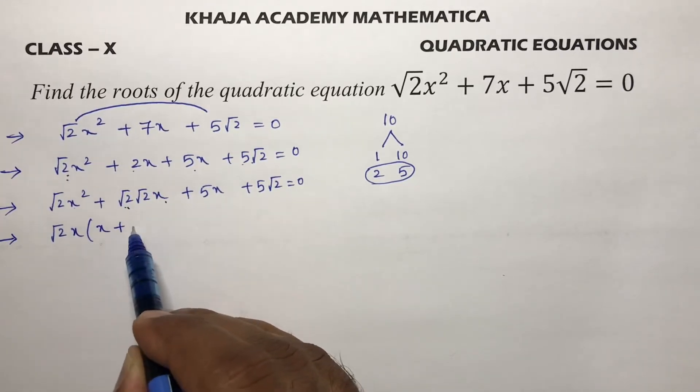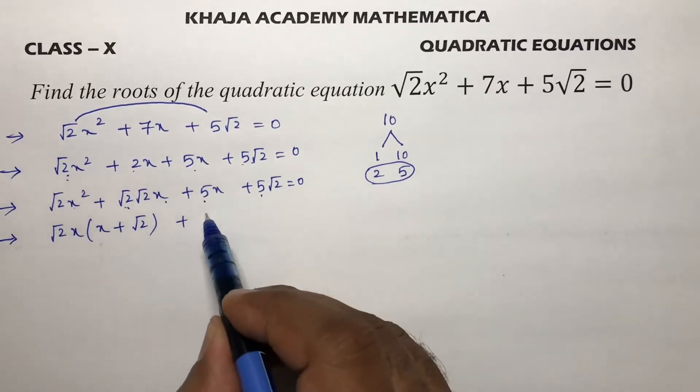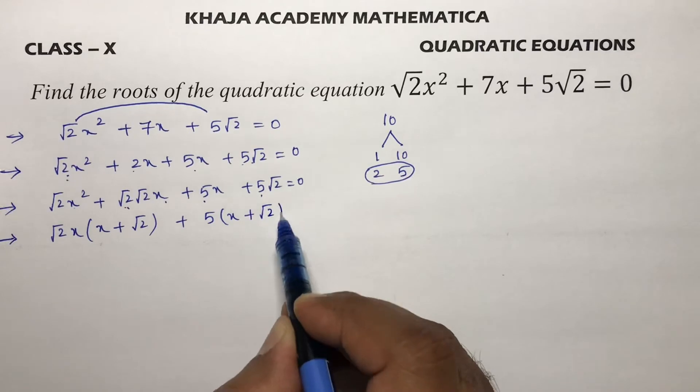√2 and 1x if I'll take common here, what is left is x, so √2x I took common, plus √2. And in these 2 terms, 5 I'll take common, so you'll be left with x + √2.